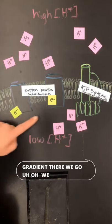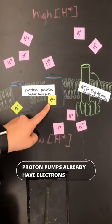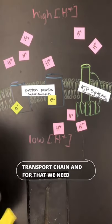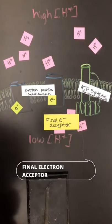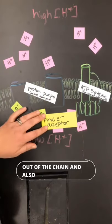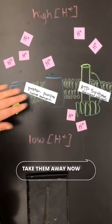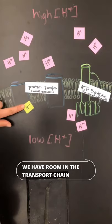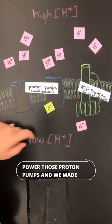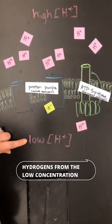We can't power another proton pump because all of our proton pumps already have electrons. We need to get electrons out of the electron transport chain, and for that we need the final electron acceptor. This is going to take an electron out of the chain and also absorb some of these hydrogens and take them away. Now we have room in the transport chain for more electrons to power those proton pumps, and we made our gradient even bigger because we removed hydrogens from the low concentration region.